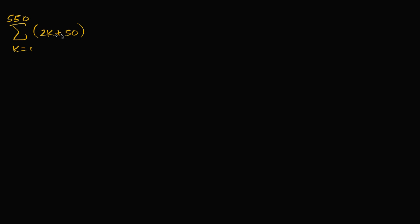I have a finite series here expressed in sigma notation, and I encourage you to pause the video and see if you can figure out what this evaluates to. This is going to evaluate to a number. So assuming you've had a go at it, let's work through this together. This is a sum from k equals one to k equals 550, so we're going to have 550 terms here — the sum of two k plus 50. Whenever I try to evaluate a series, I like to expand out the sum a little bit just to get a feel for what it looks like.